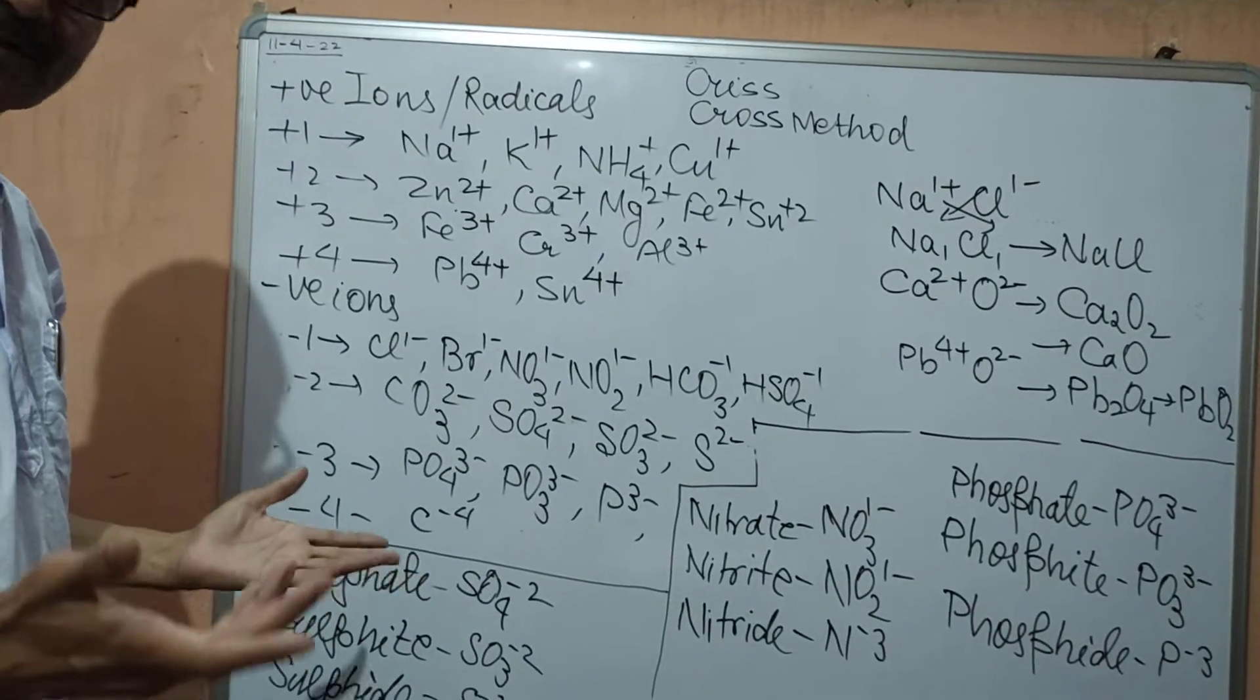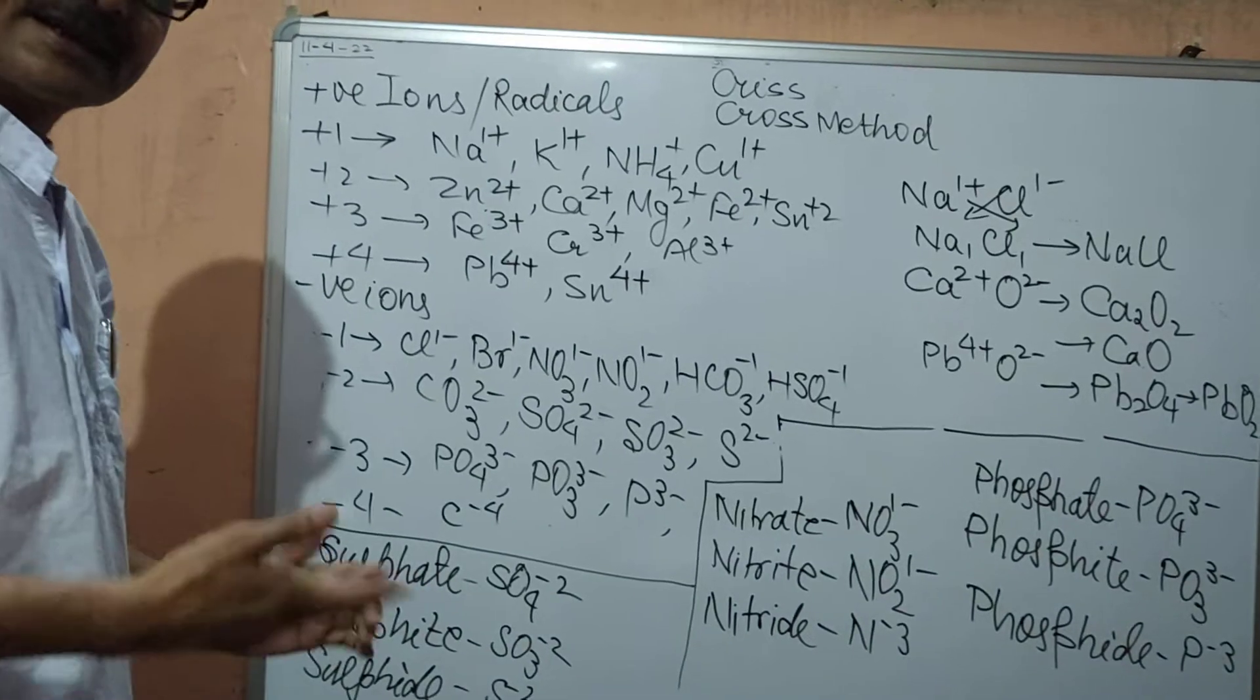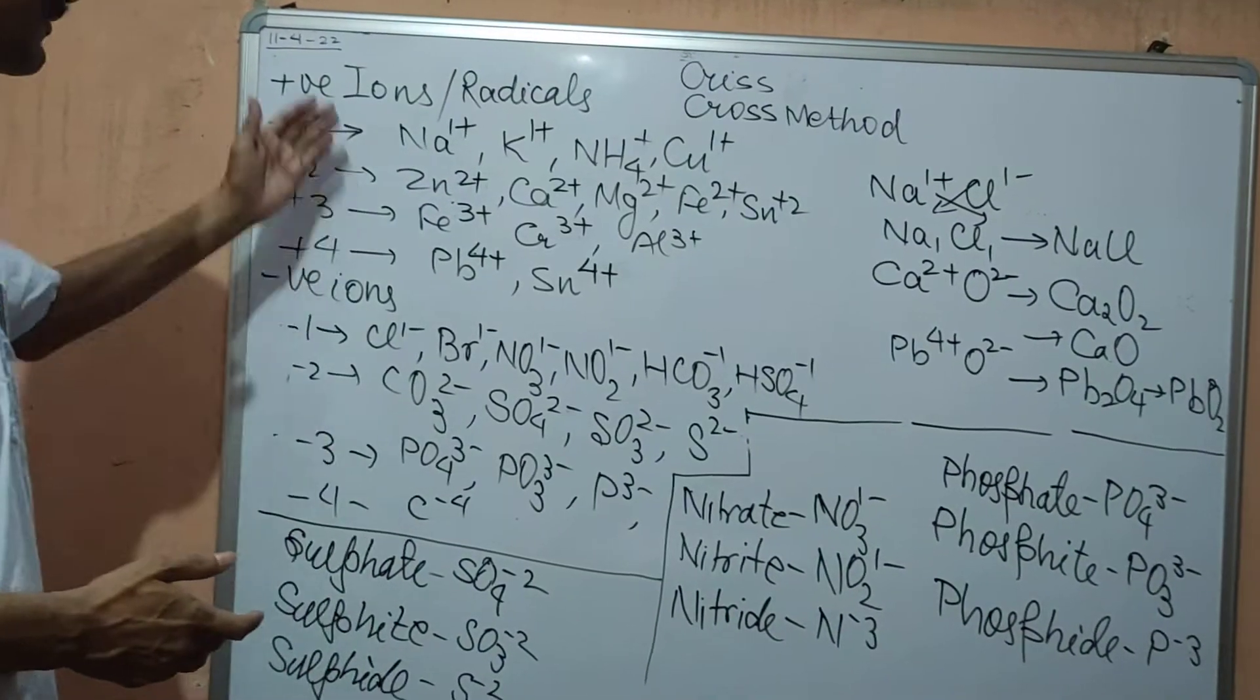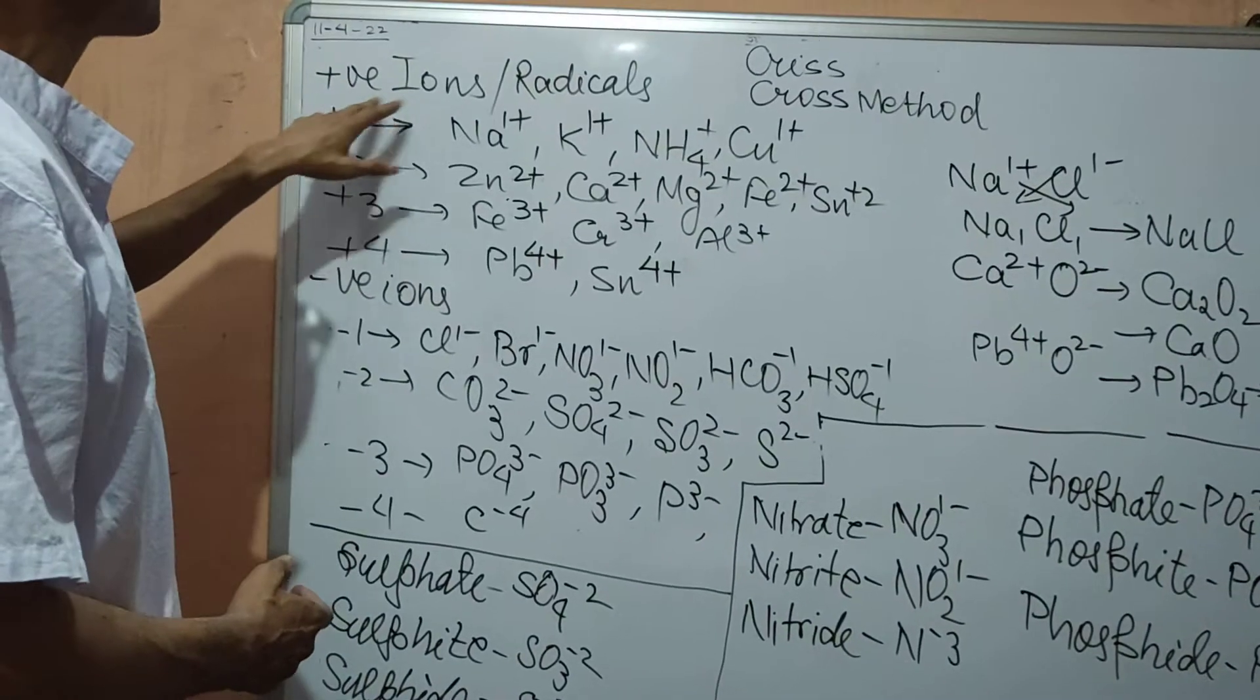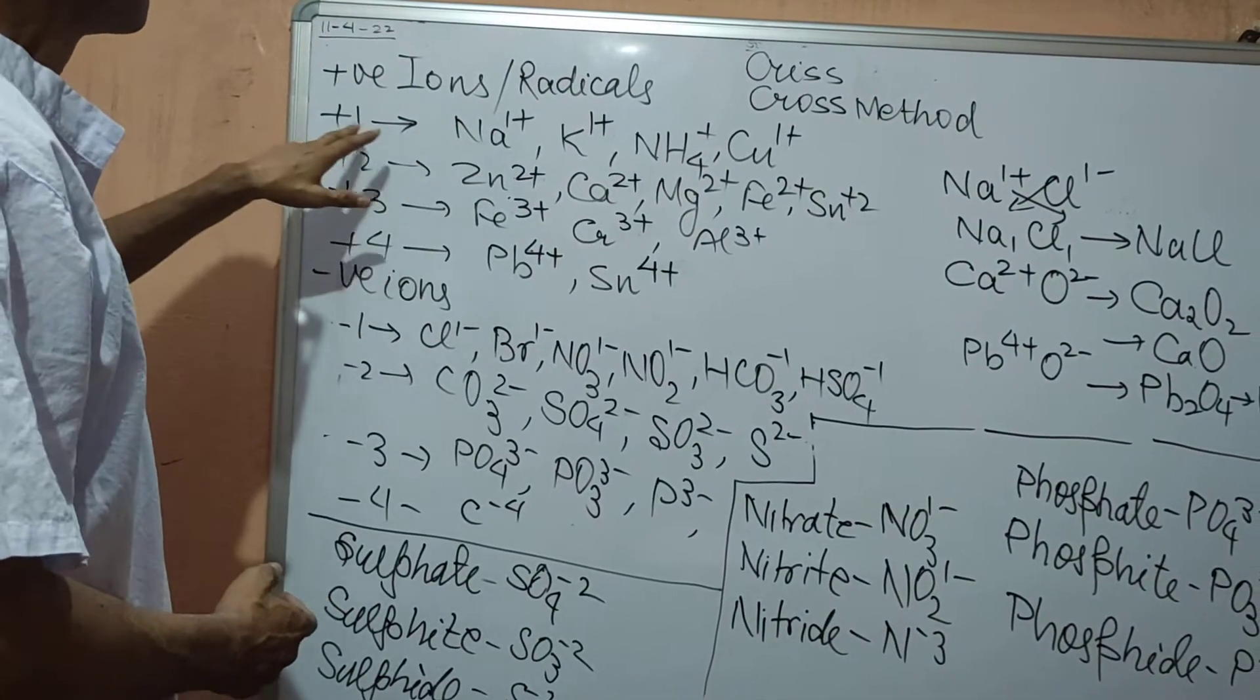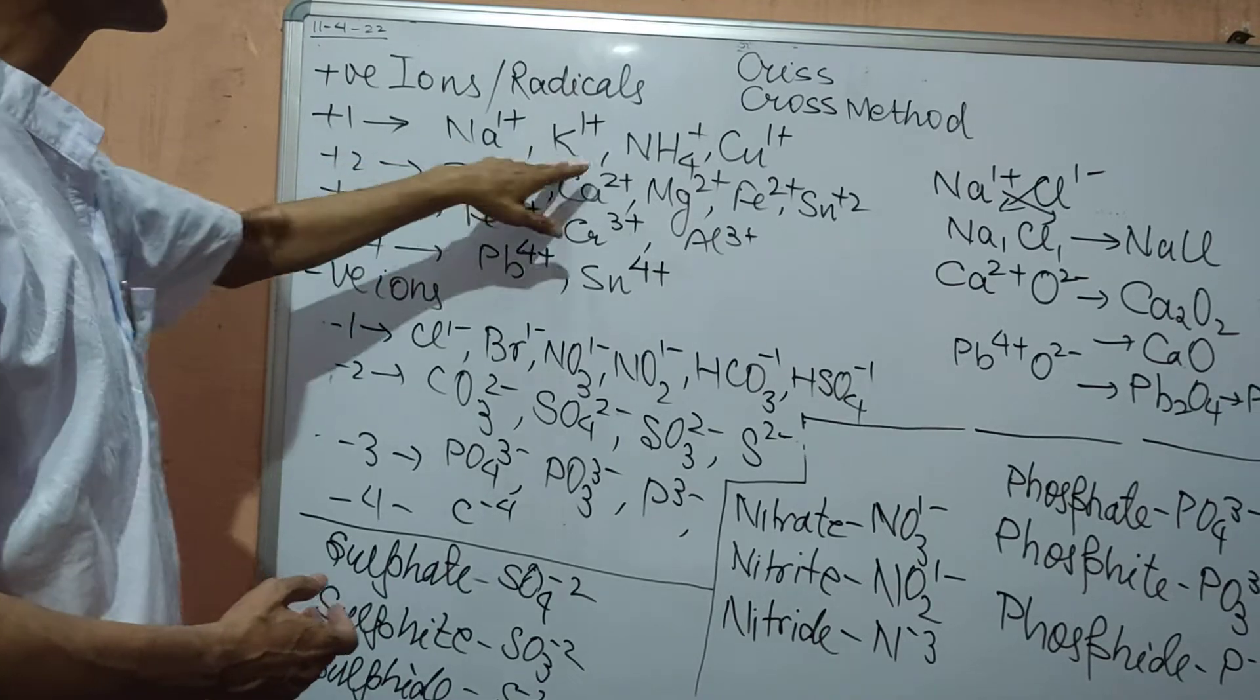It is an easy process, you have to practice this many times. Then it will become very easy. I have taken some ions and radicals in my chart. Firstly the positive ions or radicals. Plus 1: sodium, potassium, ammonium and copper all are plus 1.